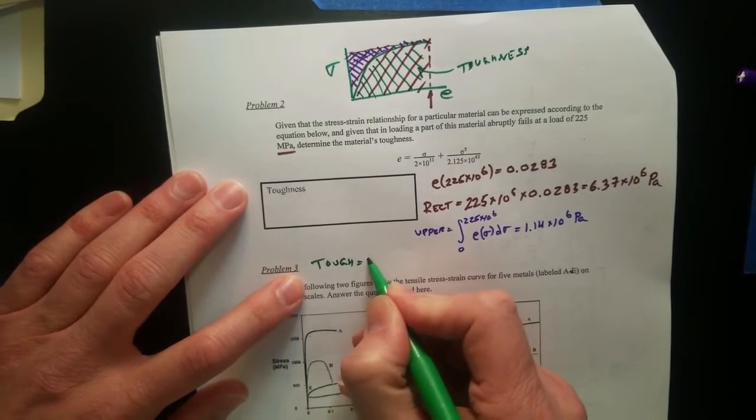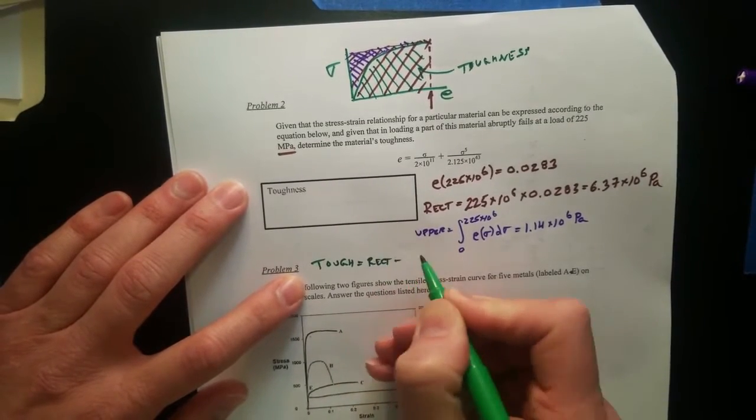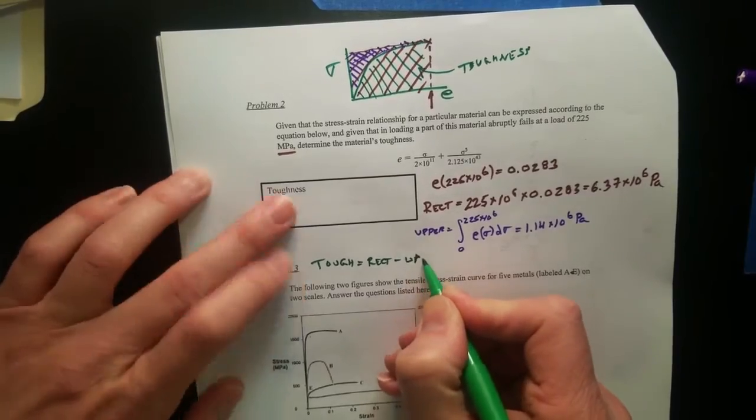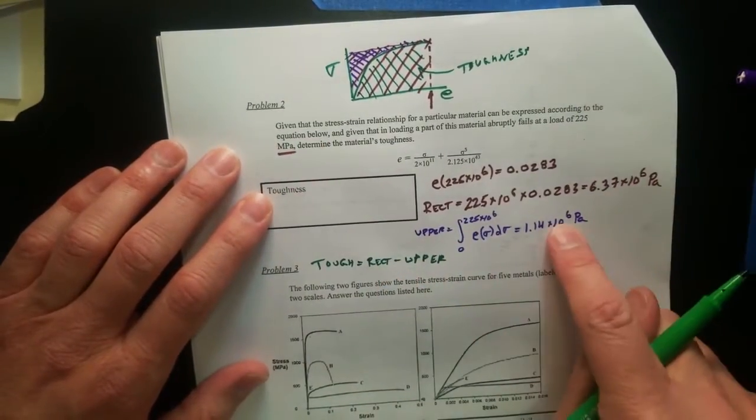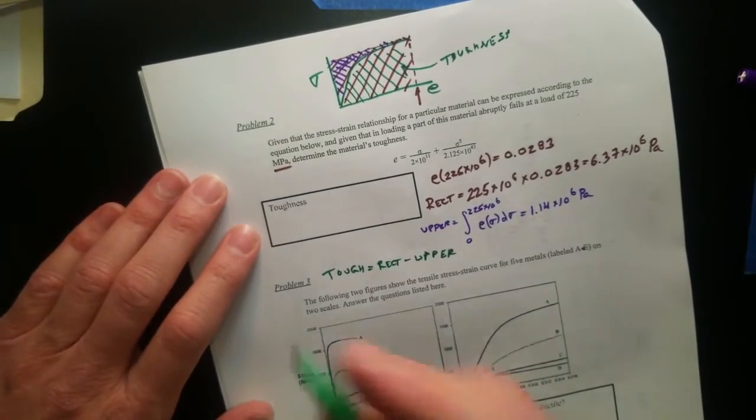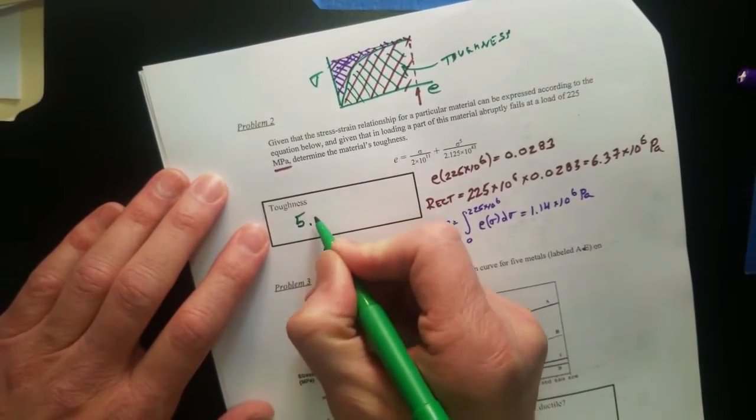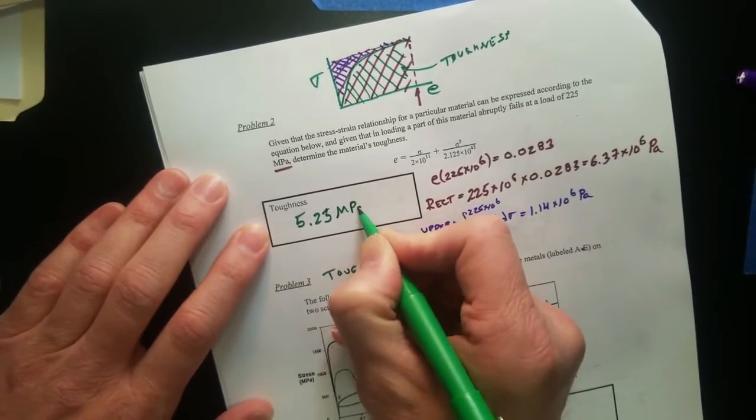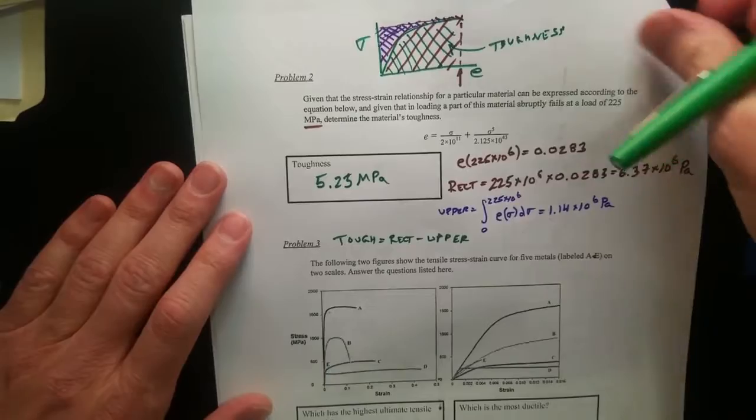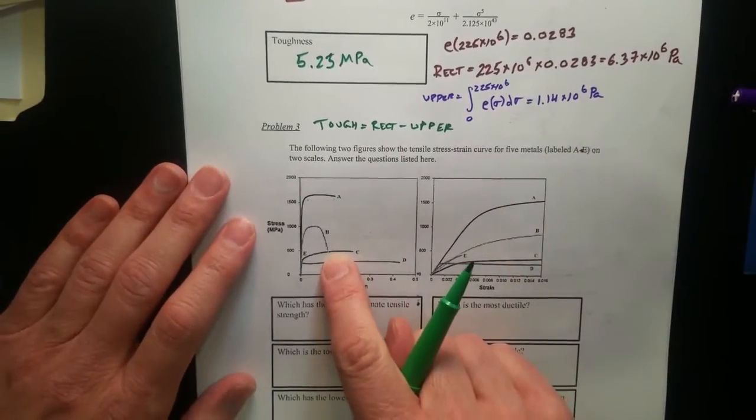We're going to get the area above, I'm going to call this upper. Substituting in our value for the function, we get 1.14 times 10 to the sixth Pascal. So now to identify the area under the curve, which is our toughness, we take the rectangle minus upper. That gives us an answer of 5.23 megapascal.